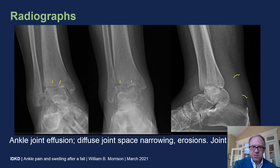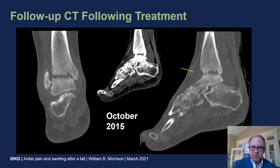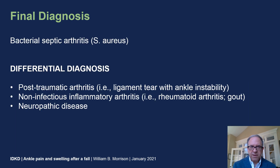There is diffuse soft tissue edema surrounding the joint indicating large joint effusion and surrounding pericapsular edema. A follow-up CT was acquired following treatment, and here you can see very nicely the erosions of the articular surfaces and the surrounding soft tissue edema. Final diagnosis after aspiration was bacterial septic arthritis with Staph aureus.